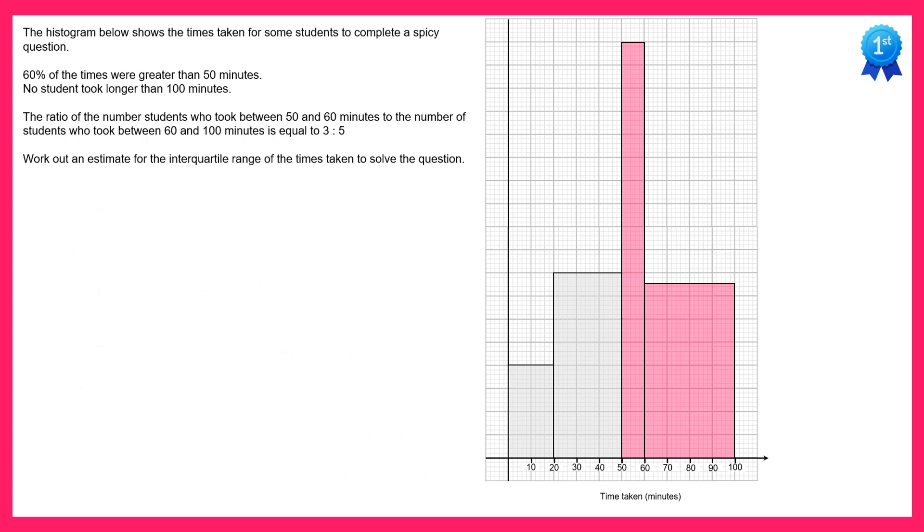We now need to work out an estimate for the interquartile range of the times taken. Since there are 80 squares in total on the histogram, the lower quartile will be at one quarter of this, so 20 squares. We can multiply this number of squares by 3 to find the upper quartile which is 60 squares. So we just need to move in from the left hand side 20 squares and we'll find the lower quartile and then in 60 squares to find the upper quartile.